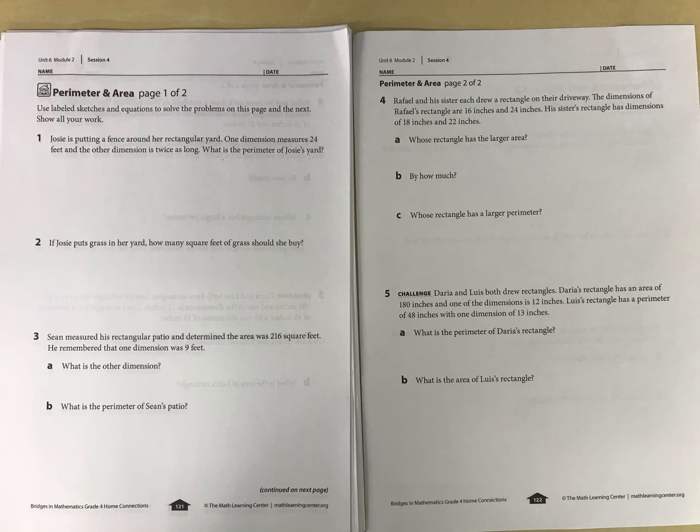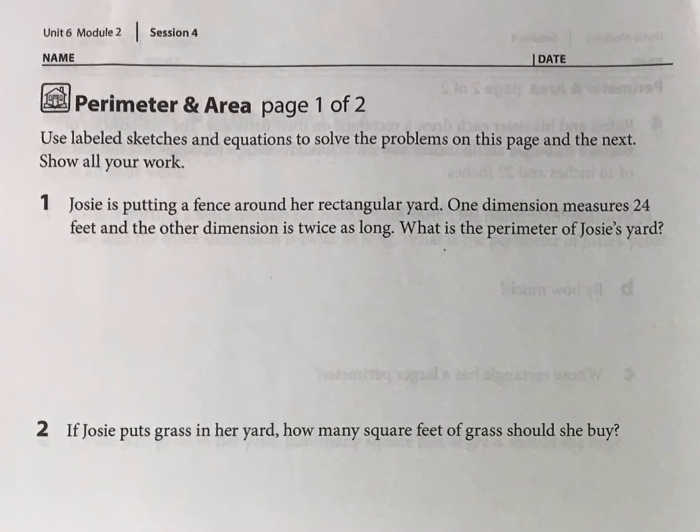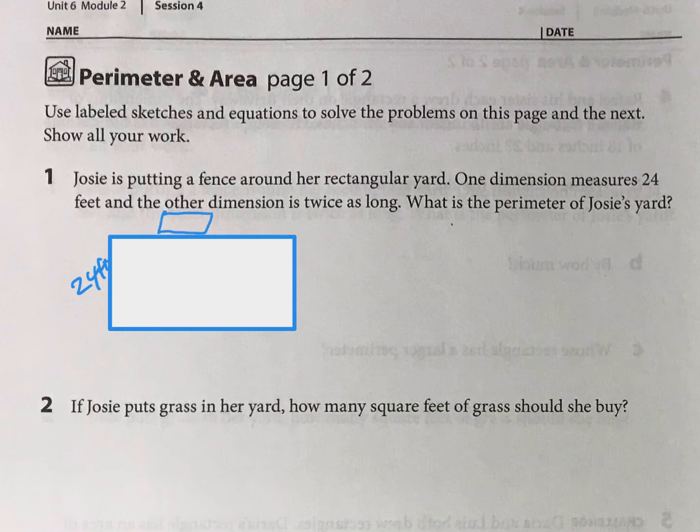All right, so we are looking at perimeter and area with this home connection. First we have Josie, who's putting a fence around her rectangular yard. One dimension of this fence is 24 feet, and the other is twice as long. So what number is twice as long or double 24? That would be 48.